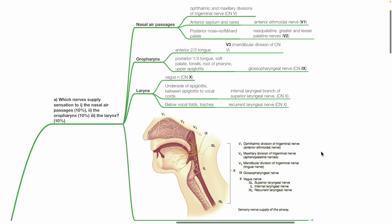Nasal air passages are supplied by the ophthalmic and maxillary divisions of the trigeminal nerve. The anterior septum and nares are supplied by the anterior ethmoidal nerve, a branch of V1. The posterior nose, soft and hard palate are supplied by the nasal palatine, greater and lesser palatine nerves, which are branches of V2.